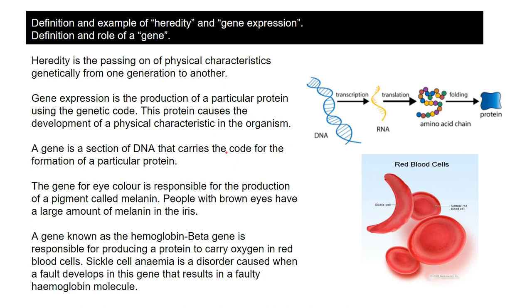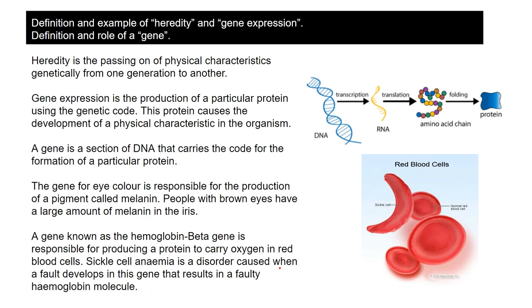Two examples. The gene for eye colour is responsible for production of a particular protein called melanin, and it's melanin that actually gives you the colour in your eyes. Somebody with brown eyes would have a lot of melanin in their iris. Another example: the gene responsible for producing haemoglobin is known as the haemoglobin beta gene. It is responsible for forming the molecule haemoglobin for carrying oxygen. Sickle cell anemia is a disorder caused when a fault develops in that gene, so it ends up producing a faulty protein and that can mean a person is not able to efficiently carry oxygen.